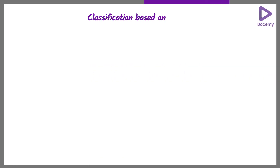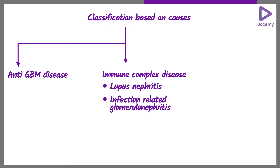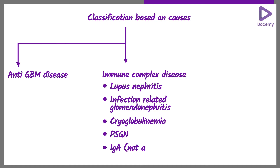How do you classify the causes of RPGN? You can have anti-GBM disease, immune complex disease. In immune complex disease you can have lupus nephritis, infection-related glomerulonephritis, cryoglobulinemia, PSGN, or IgA. These may not always present as RPGN, but can present as RPGN — immune complex mediated.